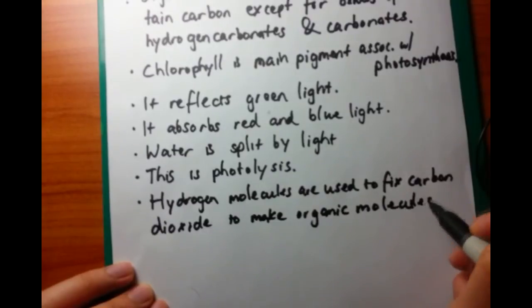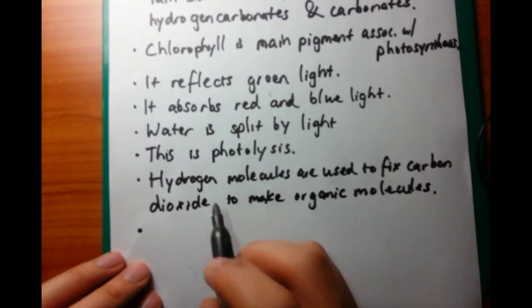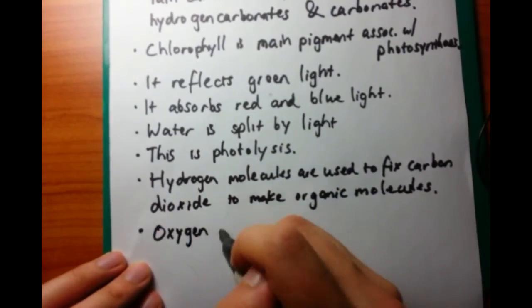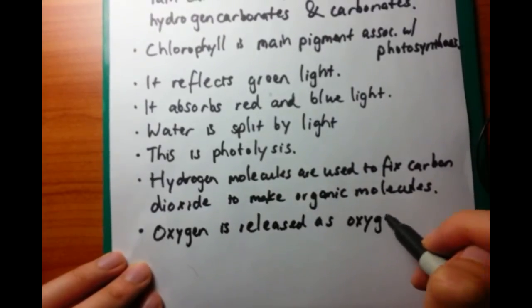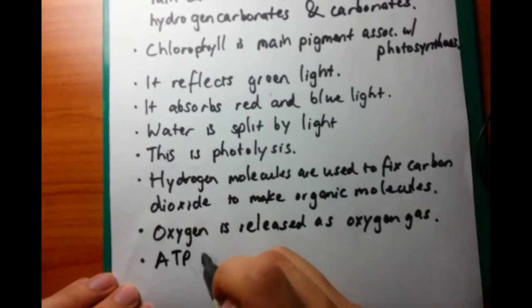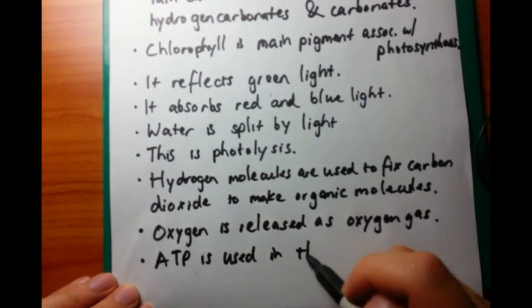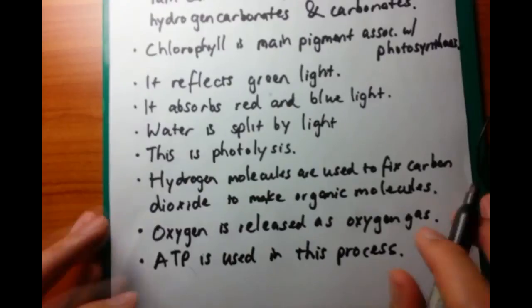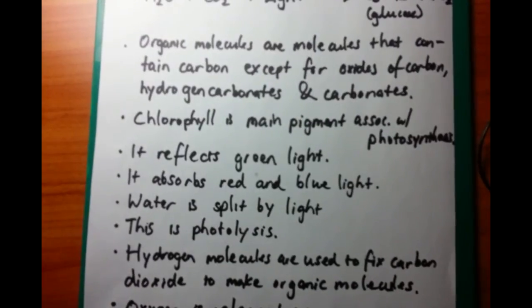The hydrogen molecules are used to fix the carbon dioxide to make the organic molecules. The oxygen molecules are then released as oxygen gas. Because of this, ATP is generated, and this ATP, or energy, is used to fix the carbon molecules to give glucose at the end.